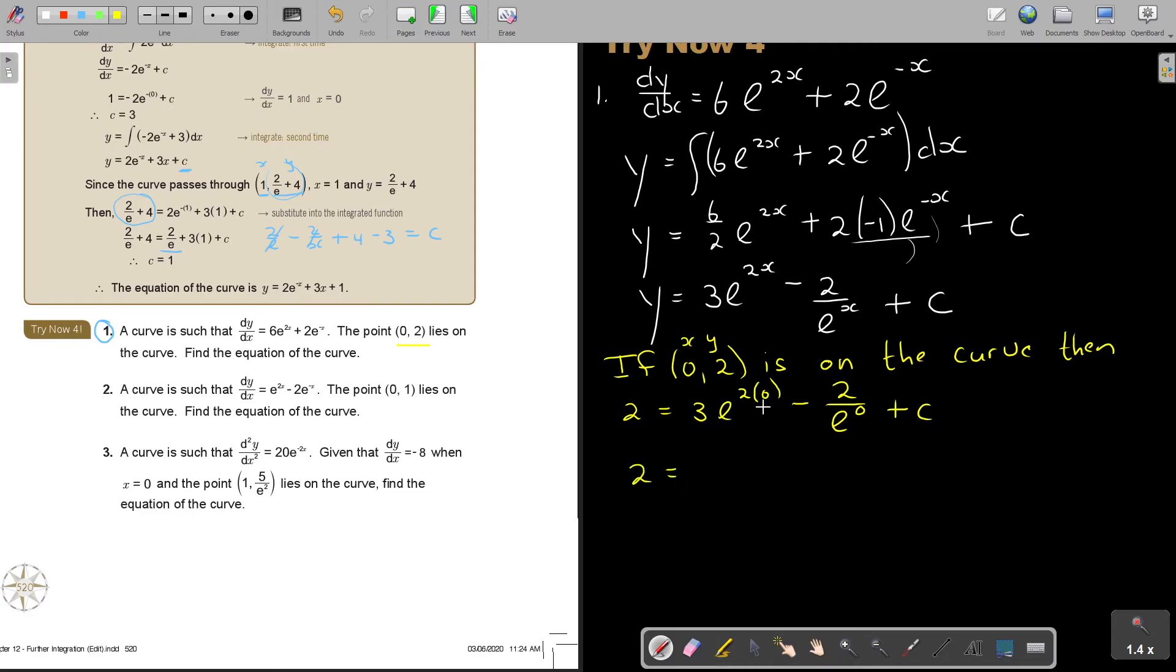Don't forget, this is e^0 is 1. So it's going to just be 3 minus 2. Don't forget, this is going to be 1 plus c. So this is going to be 2 minus 3 plus 2 is equal to c. So therefore, the value of c is 1.